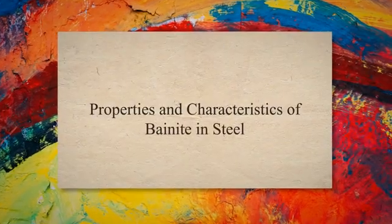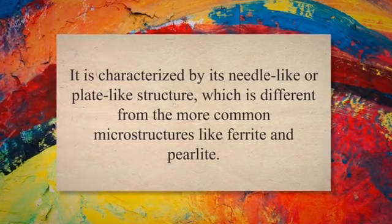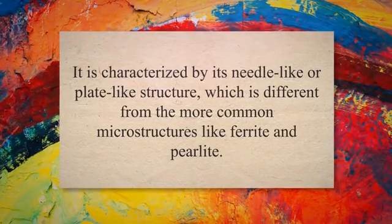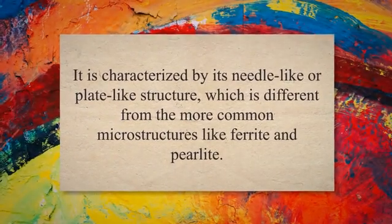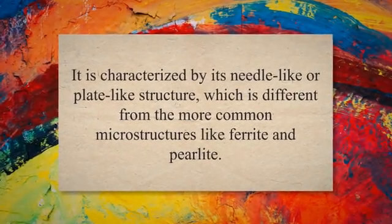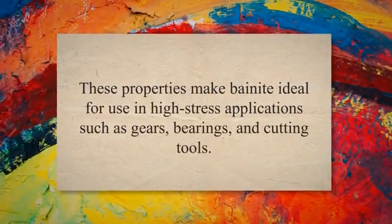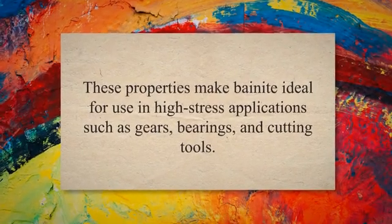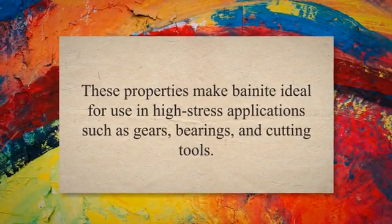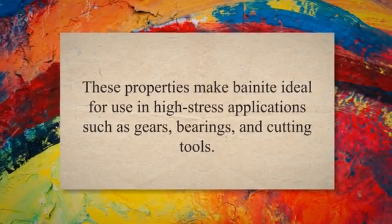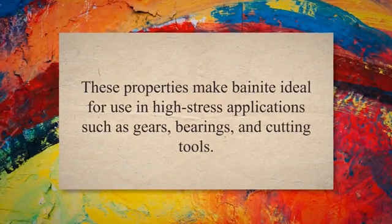Properties and characteristics of bainite in steel. Bainite is a microstructure that forms in steel when it is cooled at a moderate rate. It is characterized by its needle-like or plate-like structure, which is different from the more common microstructures like ferrite and pearlite. Bainite has unique properties and characteristics that make it an important material for various applications. One of the most notable properties of bainite is its high strength and toughness, due to the fine-grained structure which allows for greater resistance to deformation and cracking. Bainite also has good wear resistance and can withstand high temperatures without losing its strength. These properties make bainite ideal for use in high-stress applications such as gears, bearings, and cutting tools.